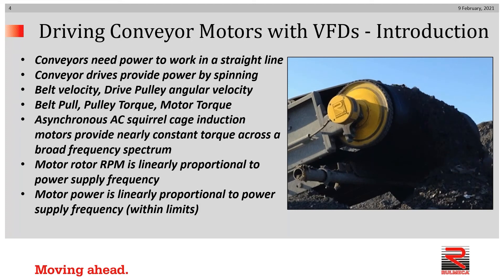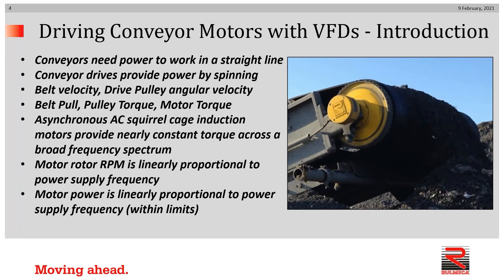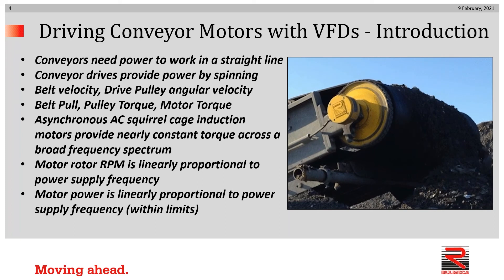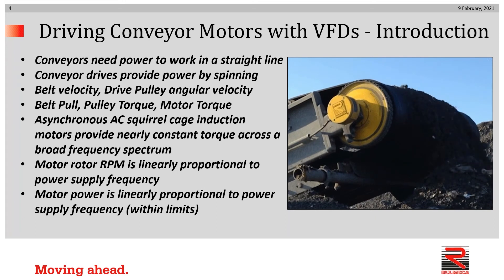Conveyors need power to work in a straight line, however conveyor drives provide power by spinning. Therefore we'll need to define terms such as belt velocity, drive pulley angular velocity, belt pull, pulley torque, and motor torque. Throughout this presentation we'll be referring to asynchronous AC squirrel cage induction motors, which provide nearly constant torque across a fairly broad frequency spectrum.